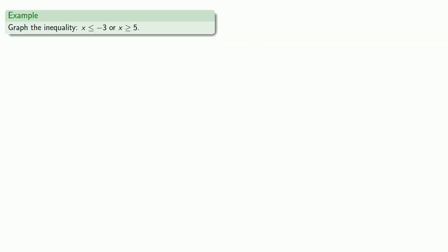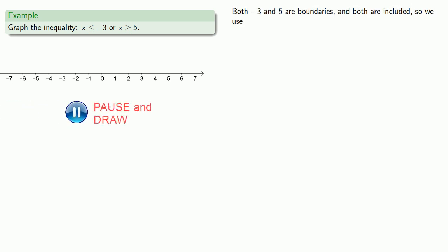How about another compound inequality, like x less than or equal to negative 3, or x greater than or equal to 5? So we'll throw down our number line. Again, both negative 3 and 5 are boundaries, and both are included, so we use closed circles.